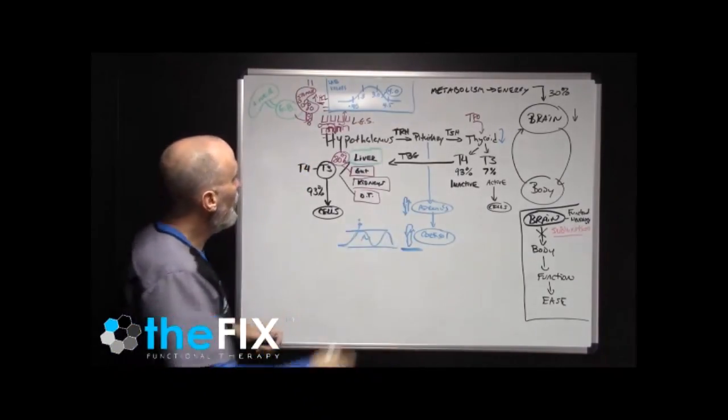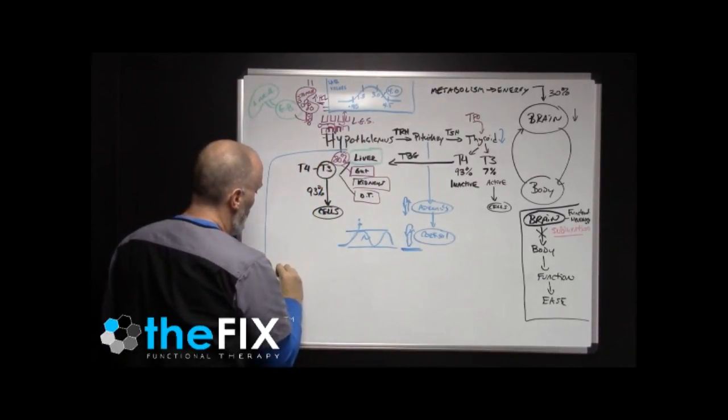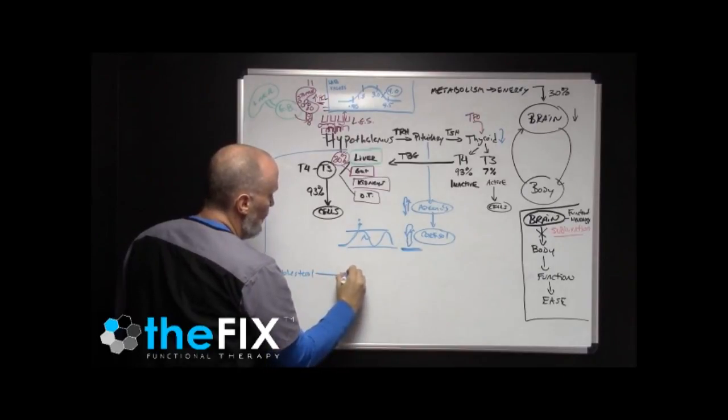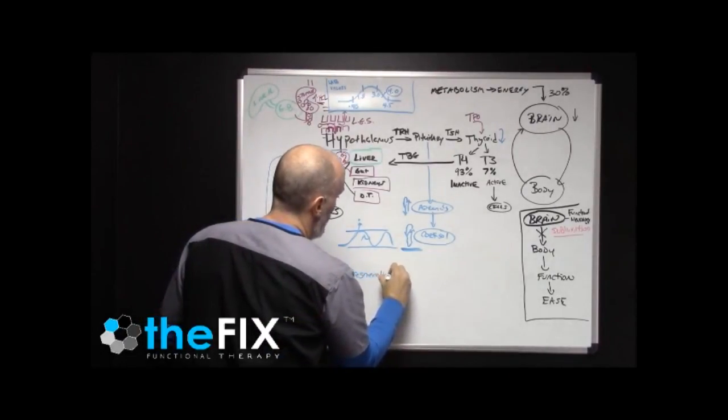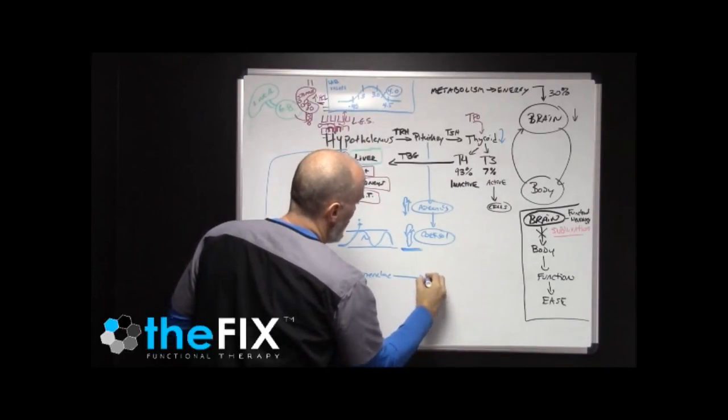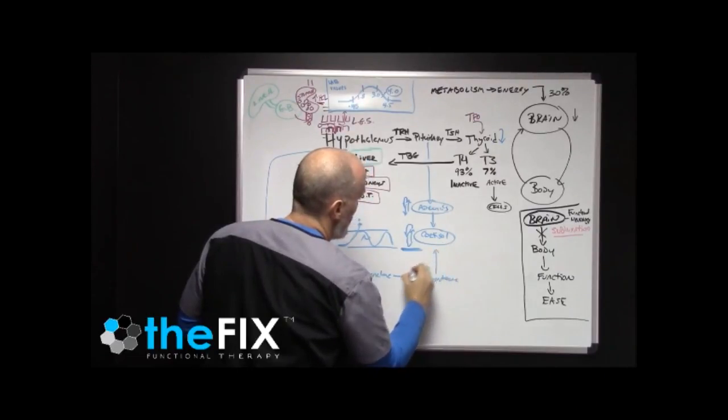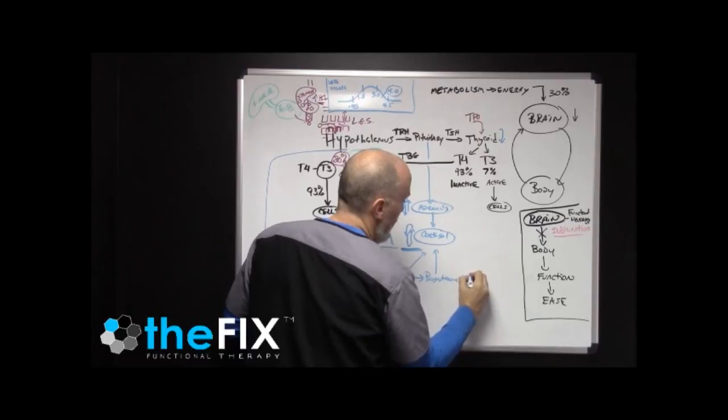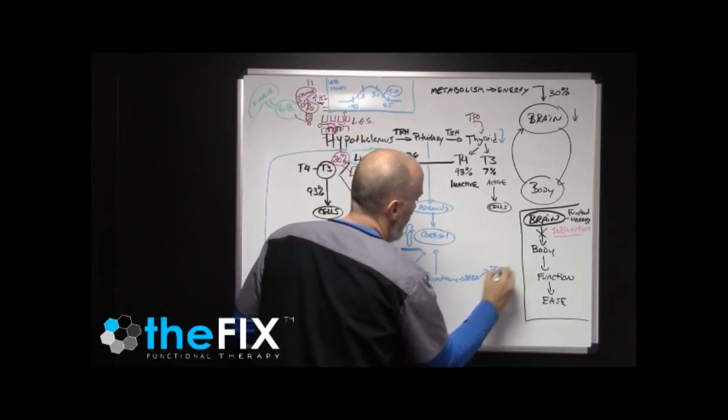On top of that, your liver produces cholesterol, which then converts into pregnenolone, which then converts into progesterone, which converts into cortisol in two different pathways. Also converts into DHEA, testosterone, and estrogen.